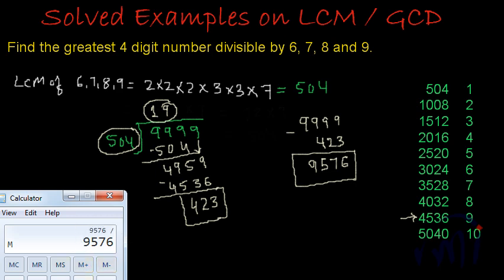Let's divide it by 7 — yes, it is completely divisible. And if we divide it by 6 — yes, it is divisible. And if I divide it by 8 — yes, it is completely divisible. And let's check with 9 also — yes. So the greatest four-digit number which is divisible by all of them is 9,576.